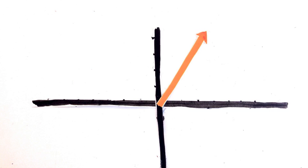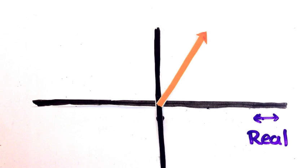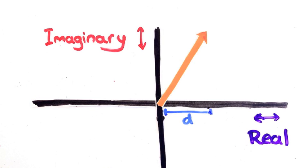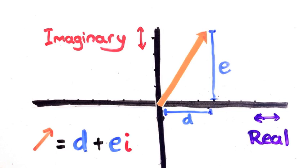If we have an arrow like this, then we call this direction the real direction, and that direction the imaginary one. Then we want to know how far we need to go each way to get to the end of the arrow. In this case, it's d units in the real direction, and e units in the imaginary one, which we can then write as d plus ei, where i represents one unit in the imaginary direction.